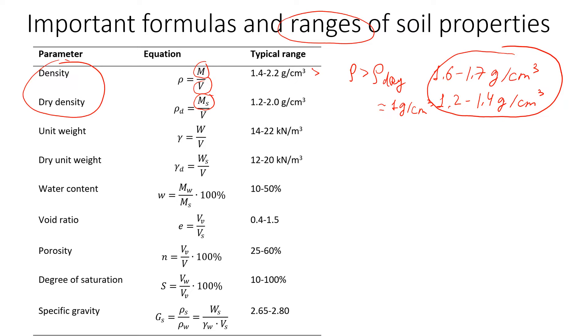Of course, if soil is saturated, it will be at the high range, 1.7 to 1.8 grams per cubic centimeter. When soil is more on the dry side, the value will be a bit lower, 1.5 to 1.6 grams per cubic centimeter.